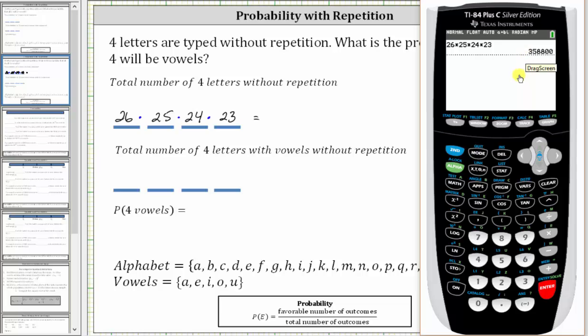We can also think of this as an arrangement where order matters without repetition. Therefore, we can determine the number of ways by evaluating 26 permute 4.